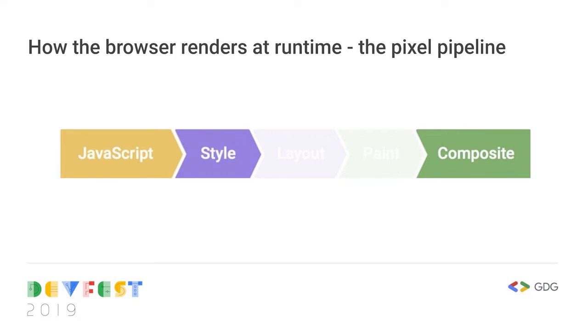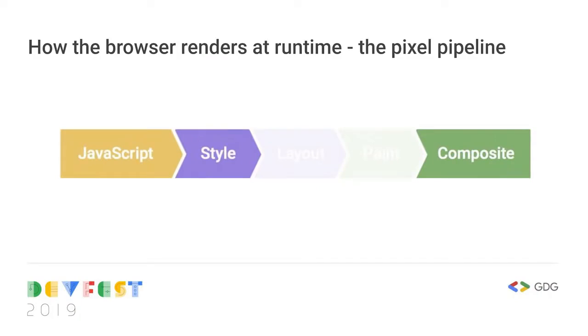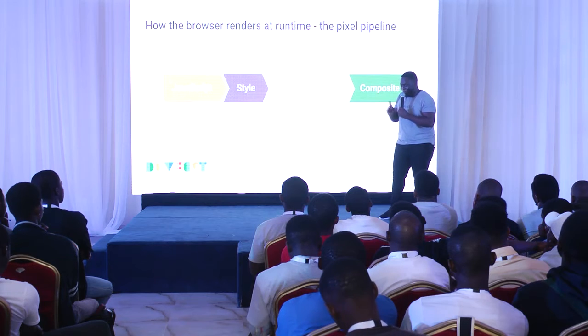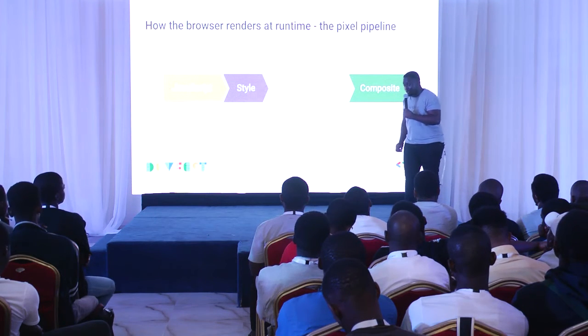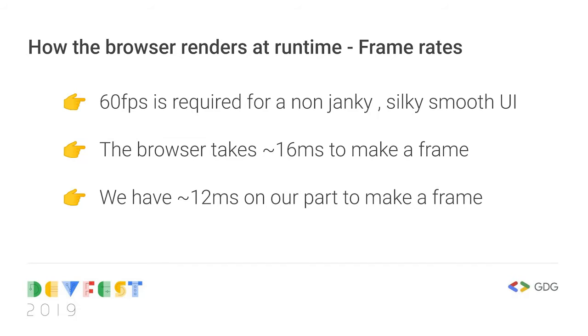We can do even better — write code that skips both layout and paint and only triggers composite. This is hard because if you want to animate a button or do something on hover, it's very difficult without changing dimensions. You want to make sure your code triggers style using transforms or opacity changes, skipping those two steps. The browser is taking time going through these steps, so you want your code to skip as many as possible.